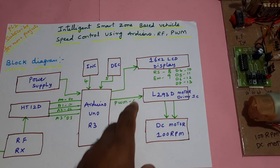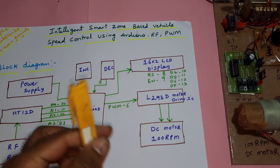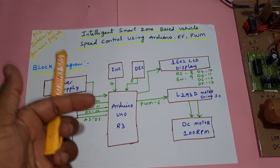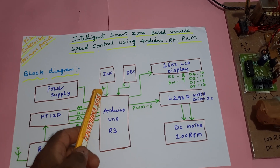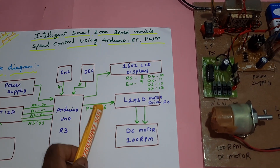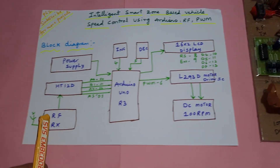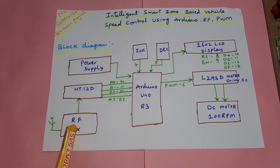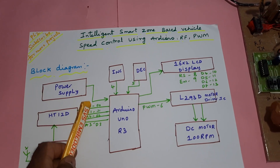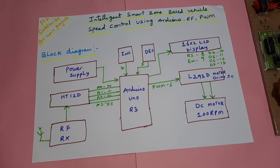The components include: a power supply module, Arduino UNO R3 board, 16x2 LCD display connected to pins RS, Enable, D4, D5, D6, D7 on pins 8, 9, 10, 11, 12, 13. There are two switch buttons for vehicle speed increment and decrement on pins 4 and 5. Vehicle speed control uses PWM — pulse width modulation technique — with an L293D motor driver IC, a DC motor, an RF receiver at 433 MHz frequency, and an HT12D decoder IC connected via data lines A0, A1, A2, A3, D0, D1, D2, D3.